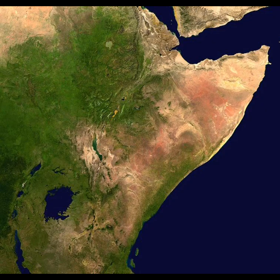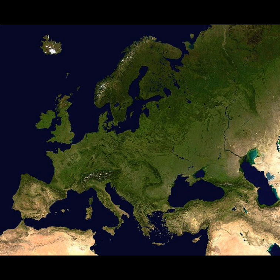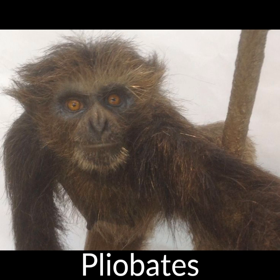Around 20 million years ago, the first true apes evolved in East Africa, and 3 million years later, lowering sea levels would allow these apes to disperse into Asia and give rise to the gibbon lineage. The same dispersal also took these primates into Europe, where they would survive until around 11 to 12 million years ago in the form of Pliopithecus, a distant relative of the gibbons.